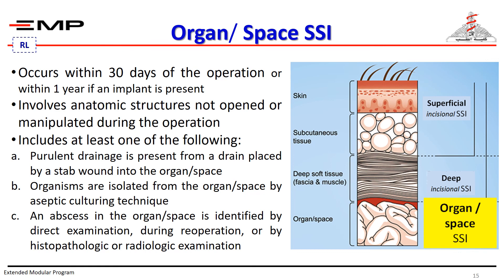Organ or space surgical site infection is characterized by the following: it occurs within 30 days of the operation, or within one year if an implant is present; it involves an anatomical structure not opened or manipulated during the operation; and it includes at least one of the following — purulent drainage from a drain placed by a stab wound into the organ space, organisms isolated from the organ or space by aseptic culturing techniques, or a deep abscess in the organ or space identified by direct examination, during re-operation, or by histopathological or radiological examination.